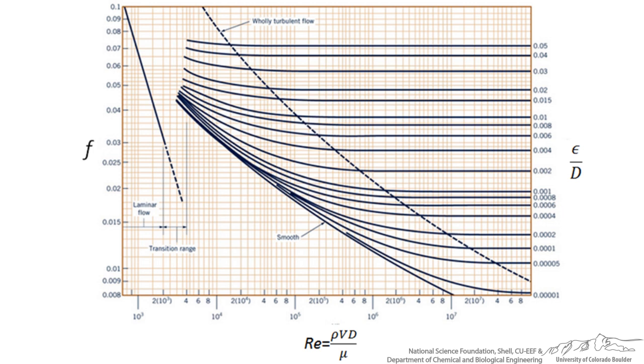You can see that it is a log-log based scale with two y-axes and an x-axis. On the x-axis we have the Reynolds number. On the right y-axis we have the relative roughness, and the relative roughness is indicated with each of the black lines that you see.